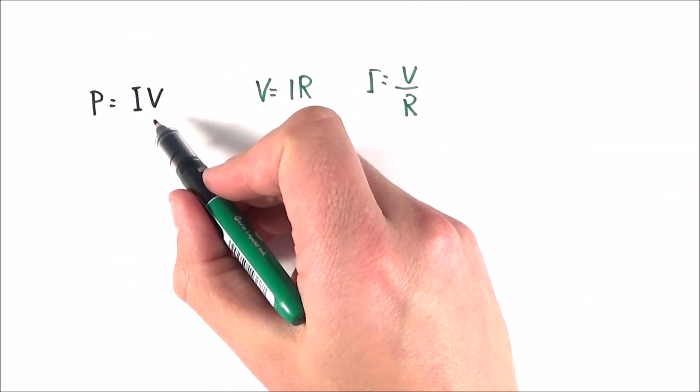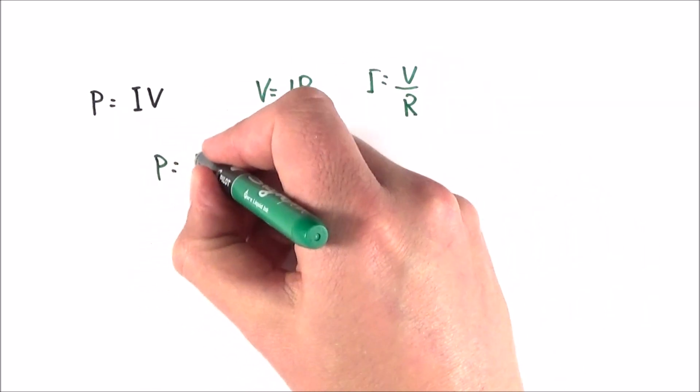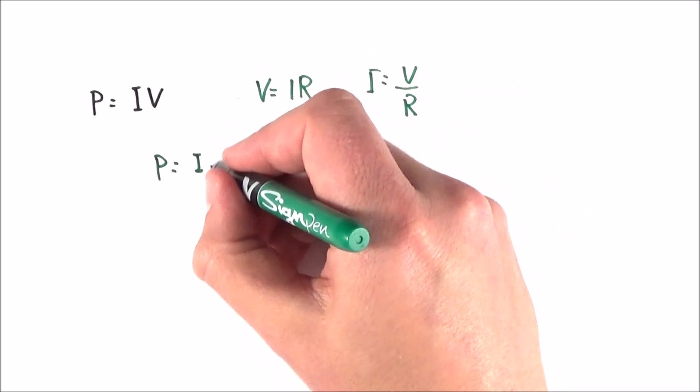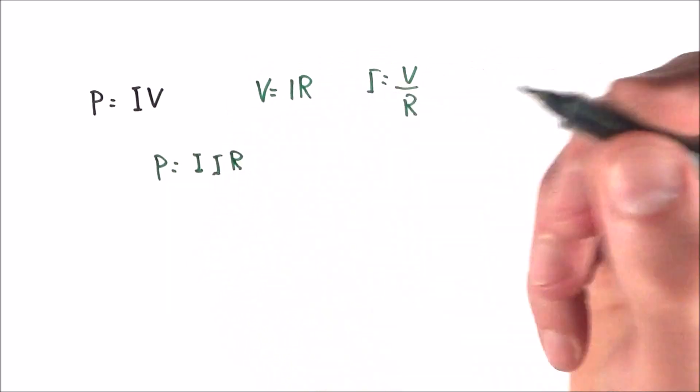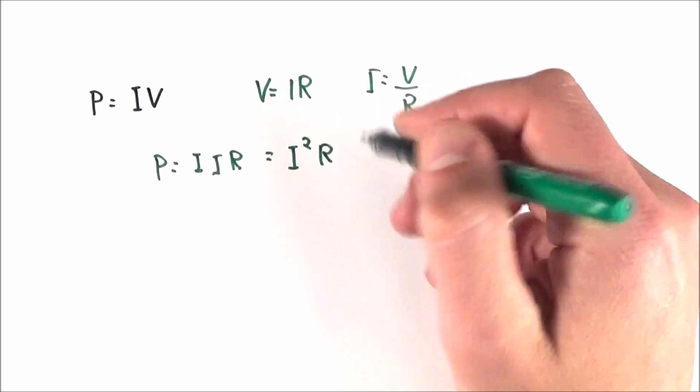So first of all, I'm going to replace the V term with IR. So I can say then that the power is equal to the current multiplied by the current multiplied by the resistance. And we can write this as P is equal to I squared R. So that's our second equation.